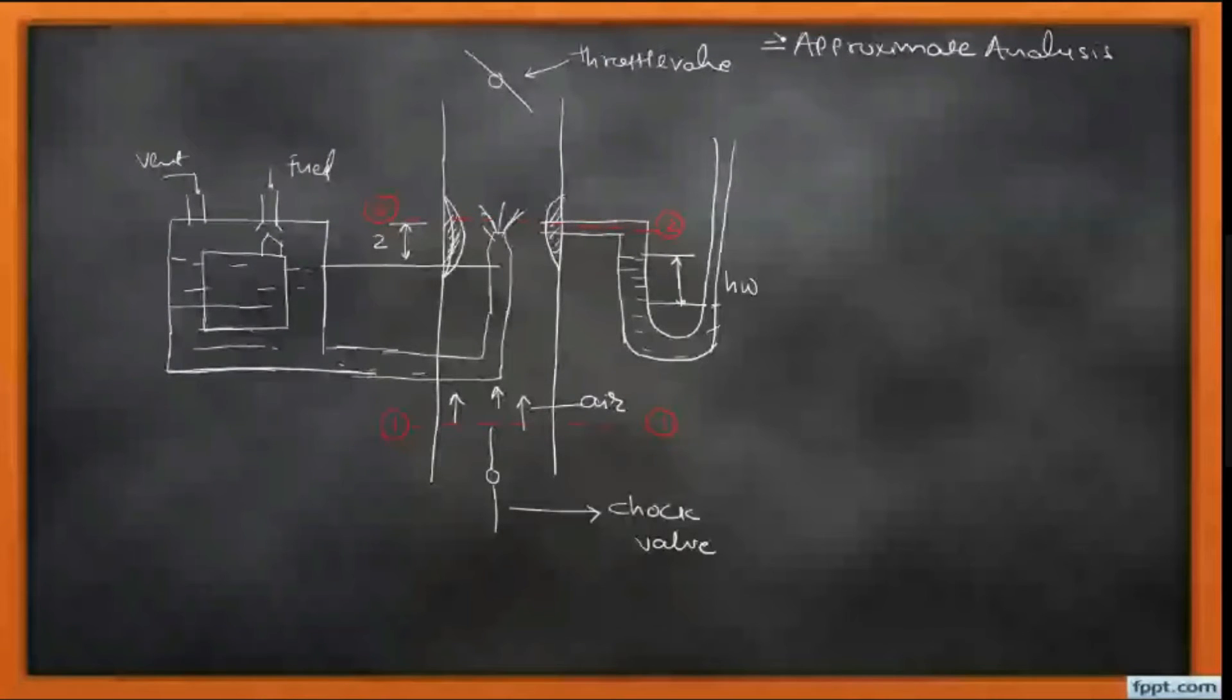In approximate analysis, we have two different assertions. One: the density of air remains constant, so that the density of air at section 1 and section 2 are equal. And second, we assume that the velocity of air at the inlet of carburetor, section 1, is zero. So these are the two assertions.